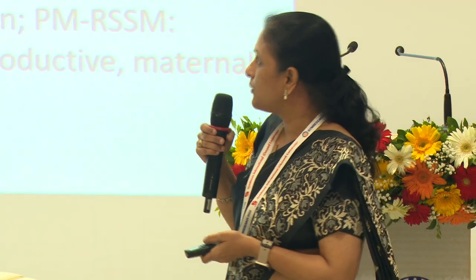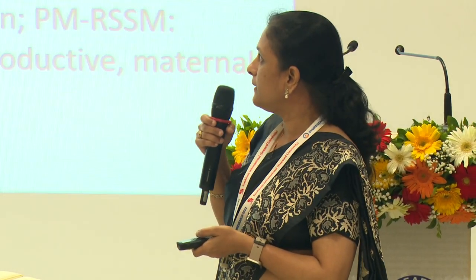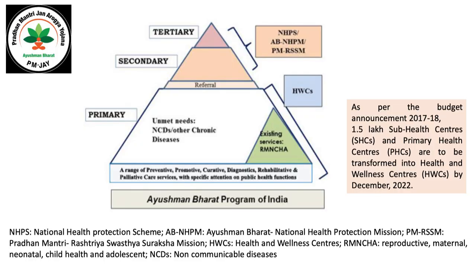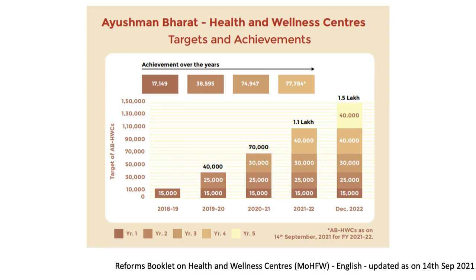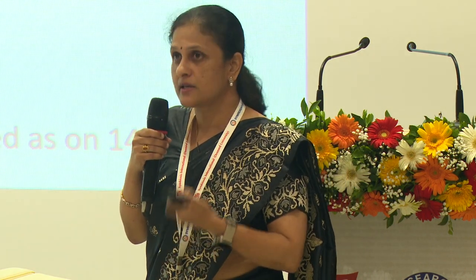Health and wellness centers are covering mainly the unmet needs for non-communicable diseases with good referral linkages to secondary and tertiary hospitals. Targets have been set — by December 2022, at least 40,000 more health and wellness centers are hoped to be established across the country. These centers are performing very well, with a focus on screening and early diagnosis. Prevention is something they are focusing a lot on.